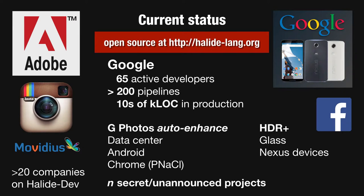Halide is already being used heavily in the real world. Our implementation is open source under a permissive license and is being actively developed in collaboration with people at Google, Adobe, and elsewhere. Most visibly at Google, there are currently dozens of engineers writing image processing code in Halide, and tens of thousands of lines of Halide code in production. The single biggest user inside Google is Google Photos, which was recently relaunched at Google I/O — their auto enhance pipeline is written in Halide, so every time you upload a photo to Google, a bunch of Halide code runs in a data center somewhere. On Android and iOS phones there's also a ton of Halide code — a stock Nexus 5 or 6 has over a hundred different Halide pipelines built into it, and dozens more in popular apps on the iOS and Android app stores.